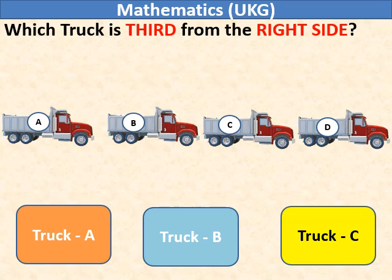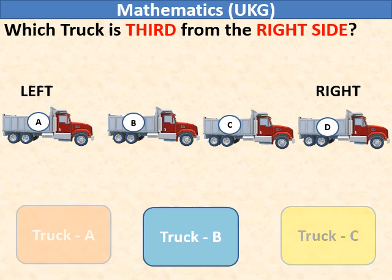Which truck is 3rd from the right side? We have the left side. This will be the right side. So 3rd from the right will be truck B.